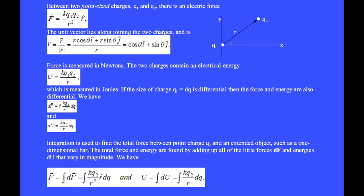Between two point-sized charges Q1 and Q2, there is an electric force vector F equals KQ1Q2 over R squared, which points in the direction R hat. This unit vector lies along the line joining the two charges. R hat is the vector R divided by the magnitude of R, so R hat equals cosine theta i hat plus sine theta j hat.